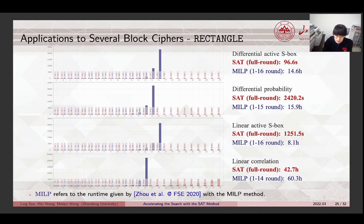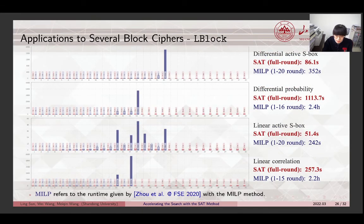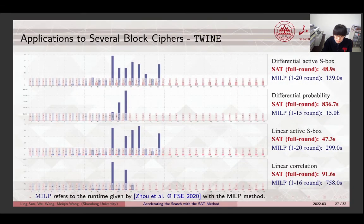This page illustrates the test result for Rectangle. We also apply the accelerating method to two Feistel ciphers. The first one is L-block. The second one is Twine. For these ciphers, we obtain complete bounds on the number of active S-boxes, the differential probability as well as the linear correlation.